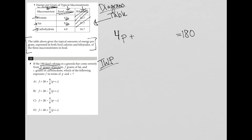now to the fat, nine times F, which represents fat, plus, for the carbohydrates, four times C. When we add all that up, we should get this 180 food calories.